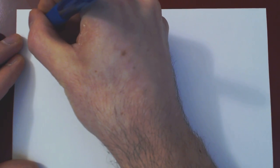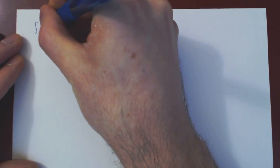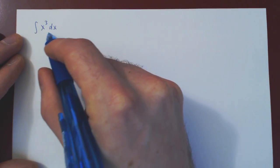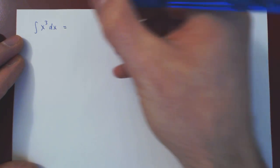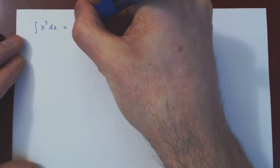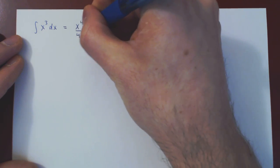Suppose I integrate x to the 3 with respect to x, so the integral of x cubed dx. Of course, from the power rule, this amounts to x to the 4 over 4 plus c.